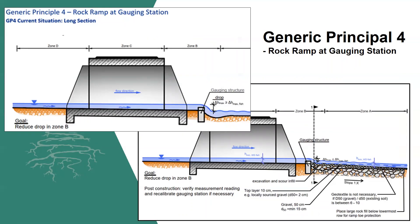Generic principle number 4 is a rock ramp at a gauging station. Again, it's about managing the transition from upstream of the barrier to downstream. You can incorporate a number of options — rock ramps or regrading the bed level — so there are a number of options to choose from.